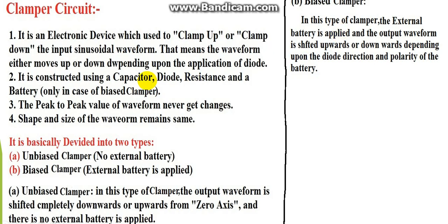In the case of the clamper, it is constructed using a capacitor, diode, resistance, load resistance, and a battery, which is only in case of biased clamper. When we use a capacitor, we can use a battery when it is biased.